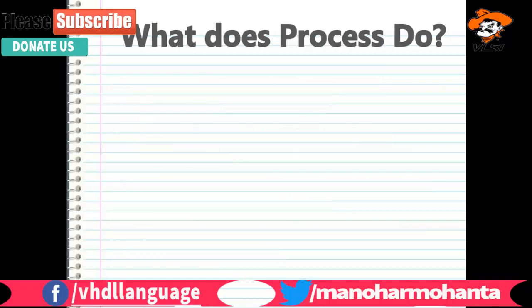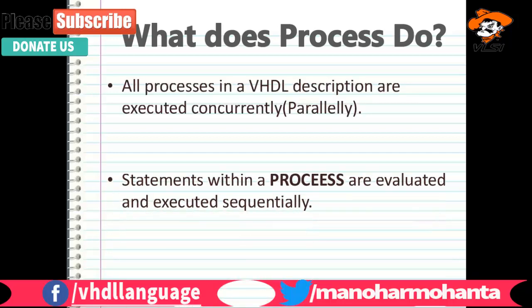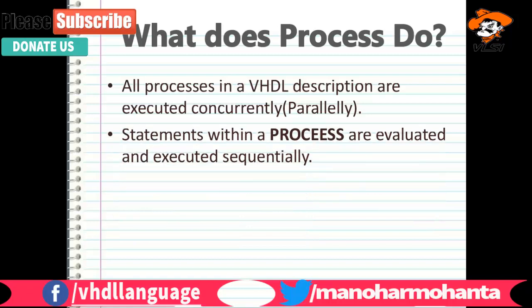Whenever you execute a code, all processes get woken up. There may be one process or many processes in one program — all the processes will be executed at the same time. Inside a process, statements run sequentially, but all processes run in parallel. So in VHDL, if you have 10 processes in one program, all 10 will be executed in parallel, while the statements within each process execute sequentially.